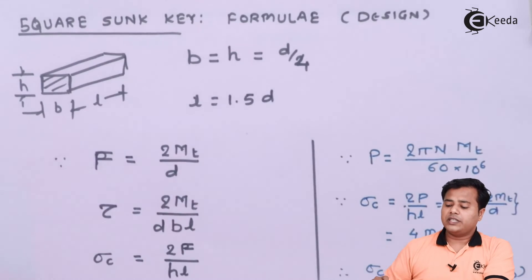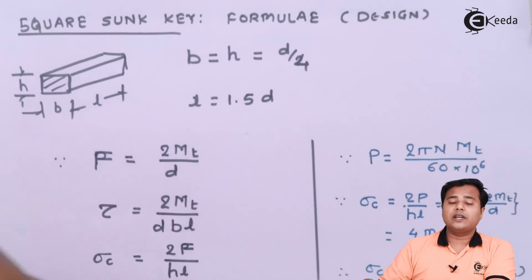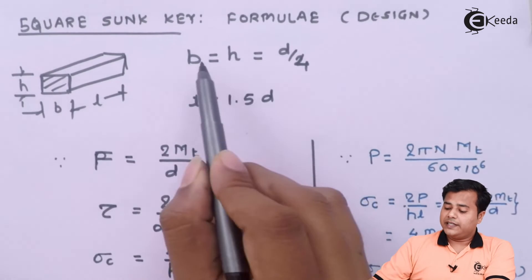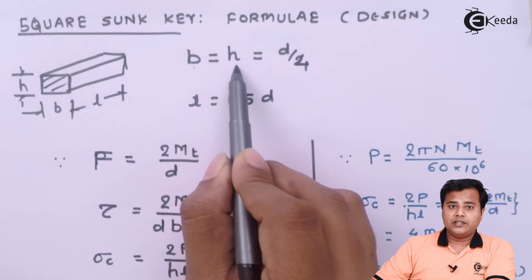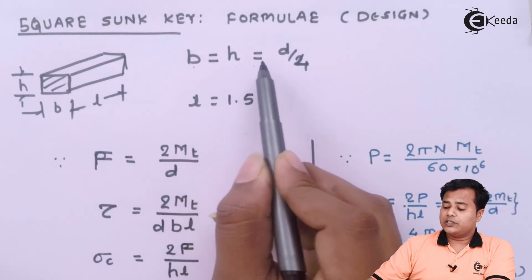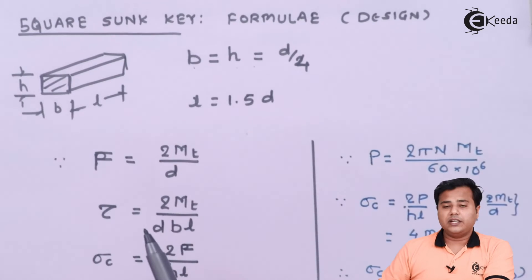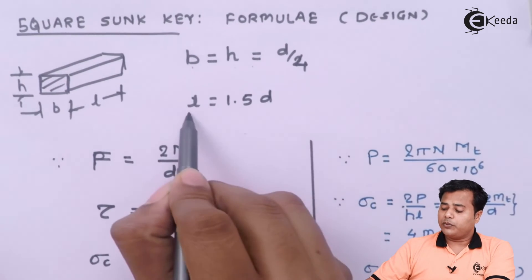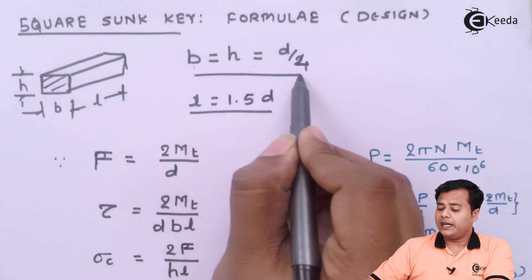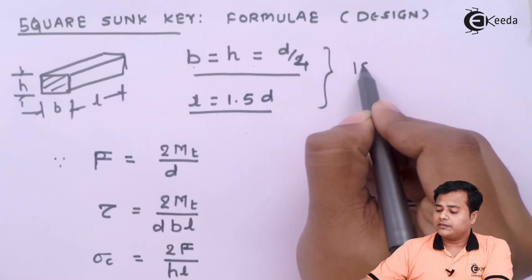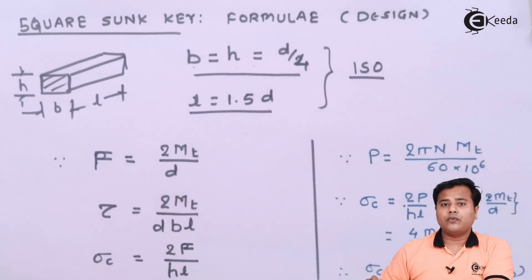The next thing is, let's look at the formulae associated with the square sunk key. Of course, for the design purpose. This is how the sunk key looks and this is how the square sunk key looks because the cross section is a square. So we can say that its breadth and height, they are equal in nature and that is associated with the diameter of shaft. It is one fourth of the shaft diameter. Second thing is the length of the key. Length of the key should be 1.5 times the diameter of the shaft and these are the international standards which one need to follow.